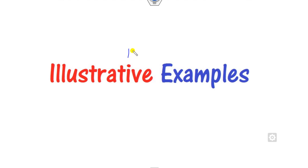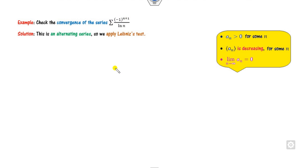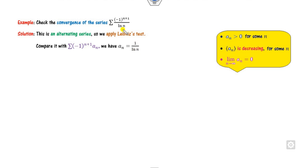We will discuss about 15 examples in this lecture so that you can understand this concept very easily. So let us discuss the convergence of the series. Clearly, because of the (-1)^n term, it is an alternating series, so we can apply this three-step rule. Comparing with the general form, a_n is nothing but 1 over ln(n), and we check the three properties.